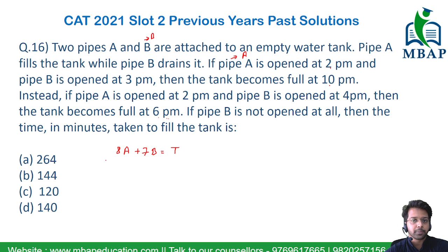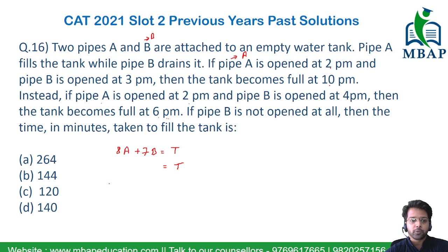In the second instance: A is opened at 2pm, B is opened at 4pm, and the tank is filled by 6pm. So A is opened for 4 hours. And B will be opened for only 2 hours. Again, the tank has been filled.